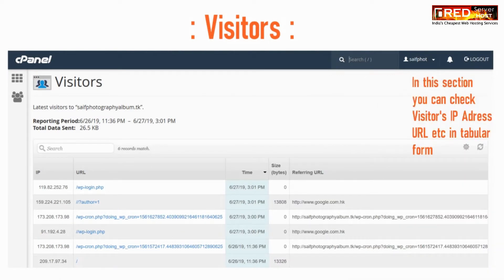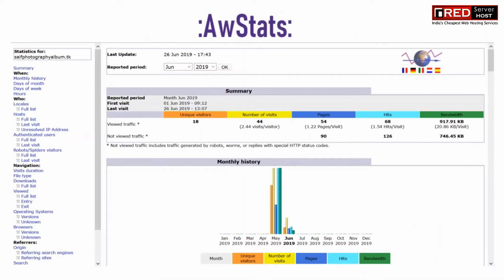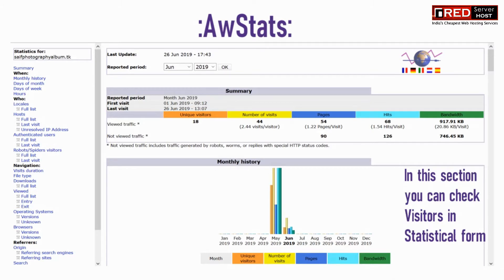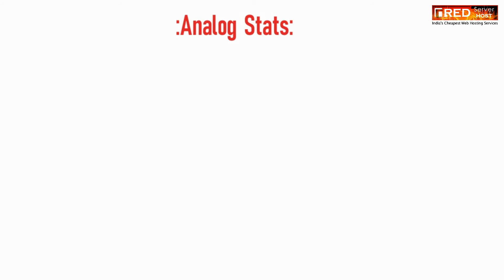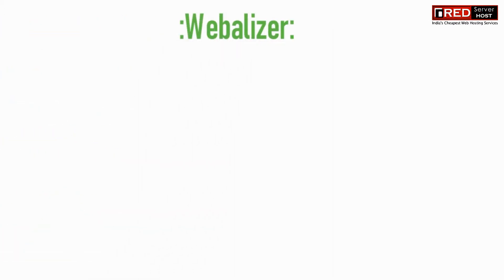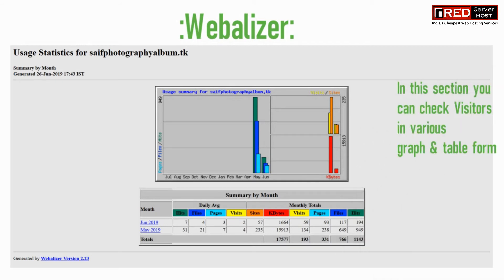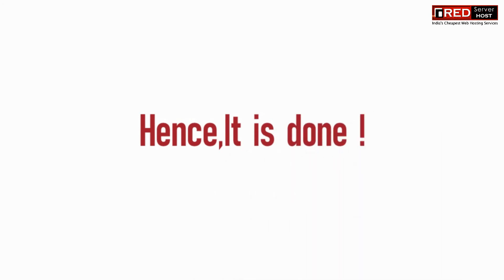You can check all of them to know about your visitors. AWStats will help you get a detailed analysis about your visitors. Analog Stats gives you detailed information about the host and traffic. Webalizer can be used for graphical analysis.